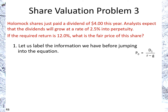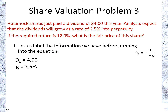We'll start by labeling the information we have before we jump into using the equation. As a reminder, we have the equation here on the right. The company just paid a dividend of $4, and because it just paid, that's not D1 which represents the dividend in the next period — so this is D0 equals $4. The dividends will be growing at a rate of 2.5% into perpetuity, so that is G equals 2.5%. And the required return is 12%, which is R in this equation.